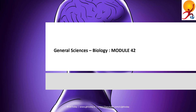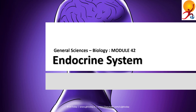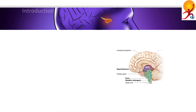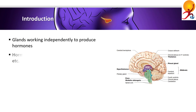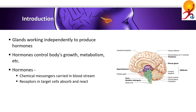Hello everyone, welcome to General Sciences Biology Module 42. Today's lesson is on the human endocrine system. The endocrine system is a collection of glands that work interdependently and produce hormones that regulate the body's growth, metabolism, and sexual development and function. The endocrine system influences almost every cell, organ, and function of our bodies, and is instrumental in regulating mood, growth and development, tissue functions, metabolism, and sexual and reproductive processes.